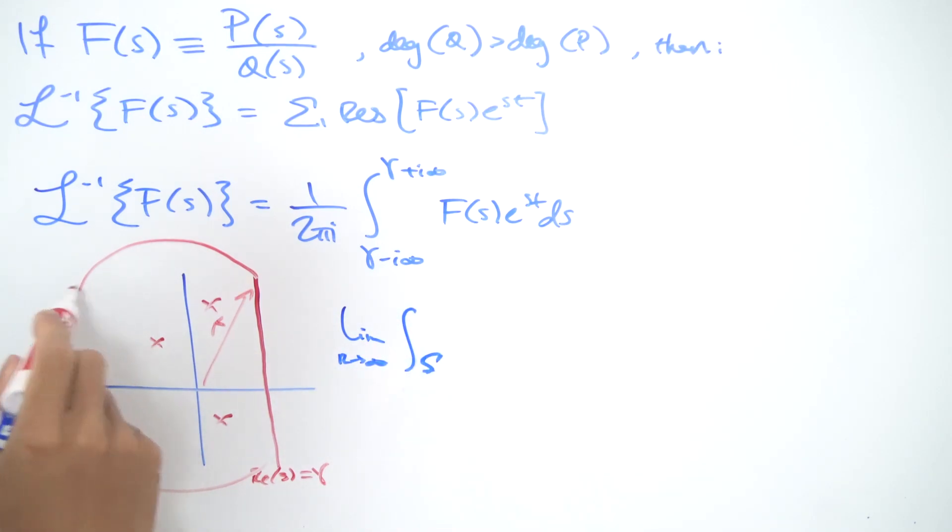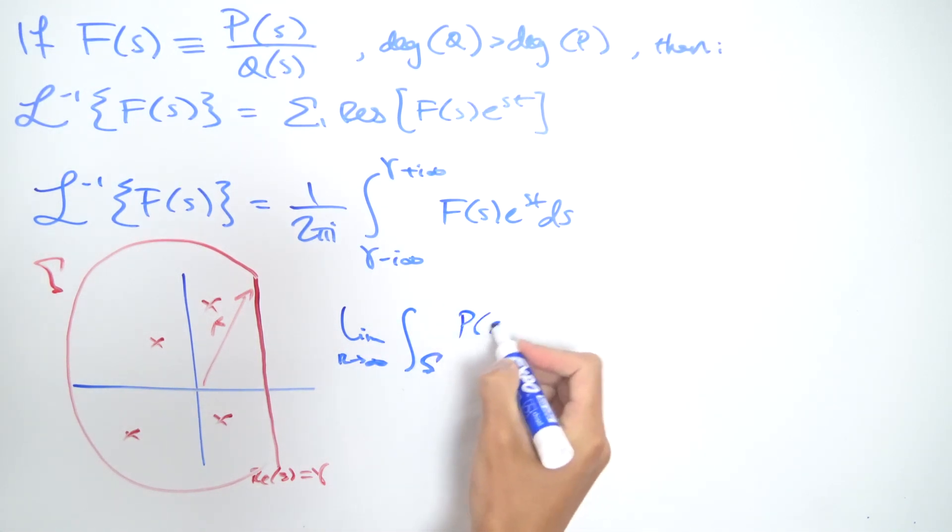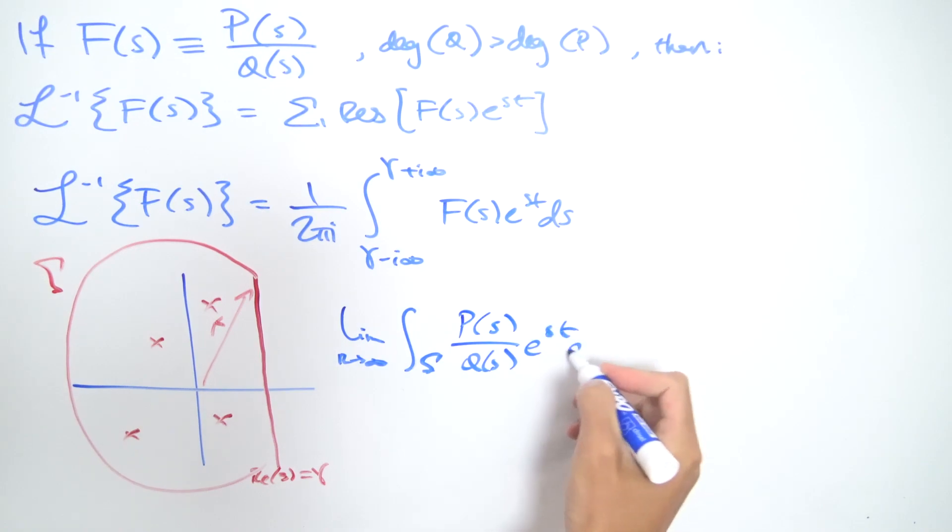so let's call this path Γ, of P(s) divided by Q(s), where P and Q are polynomials, times e^(st) ds, it's actually equal to zero. So you can click the link in the description to see the proof of that.